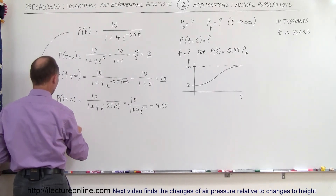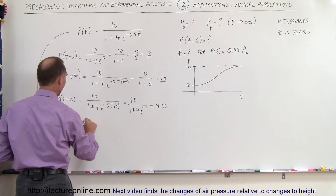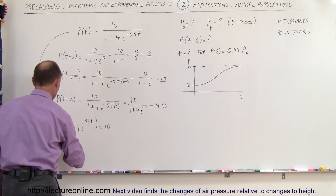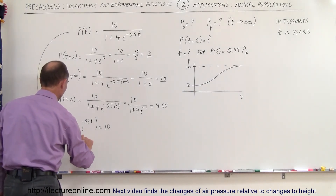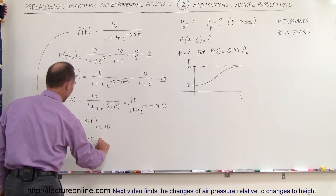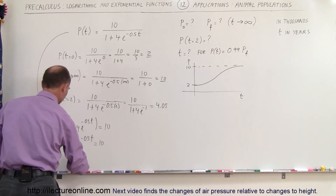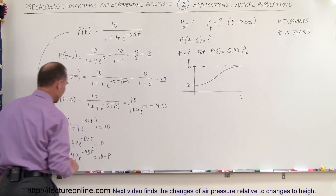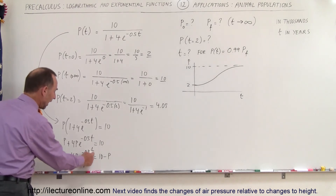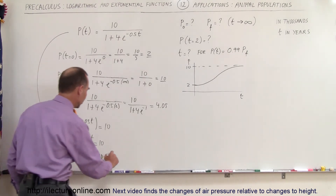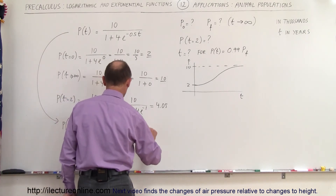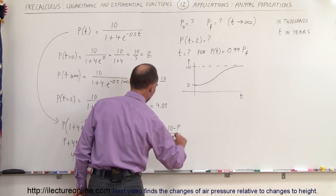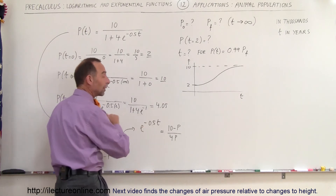To solve for t, multiply both sides to get P times (1 plus 4e to the minus 0.5t) equals 10. Expanding: P plus 4Pe to the minus 0.5t equals 10. Subtracting P from both sides gives 4Pe to the minus 0.5t equals 10 minus P. Dividing both sides by 4P isolates the exponential: e to the minus 0.5t equals (10 minus P) divided by 4P.